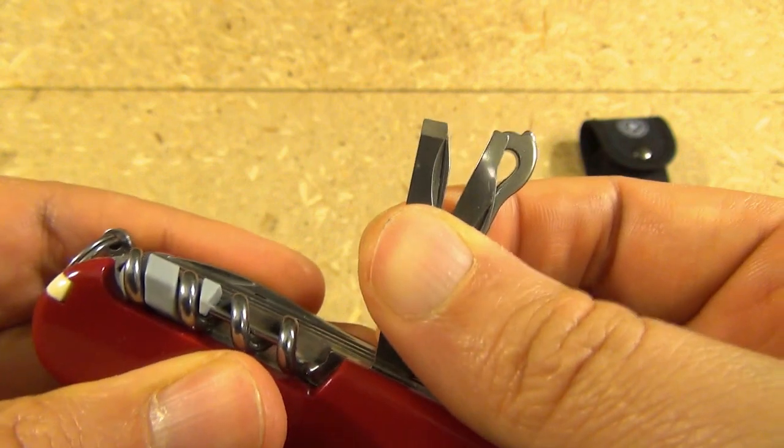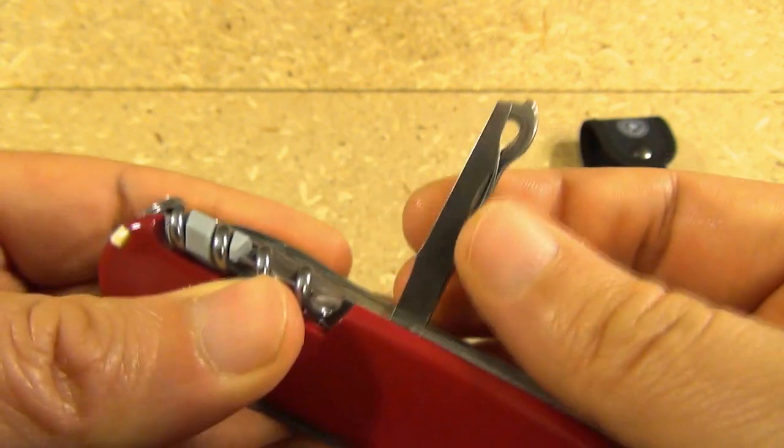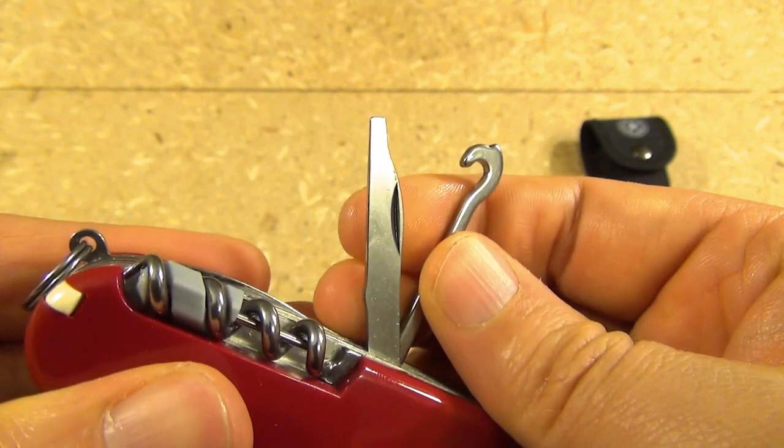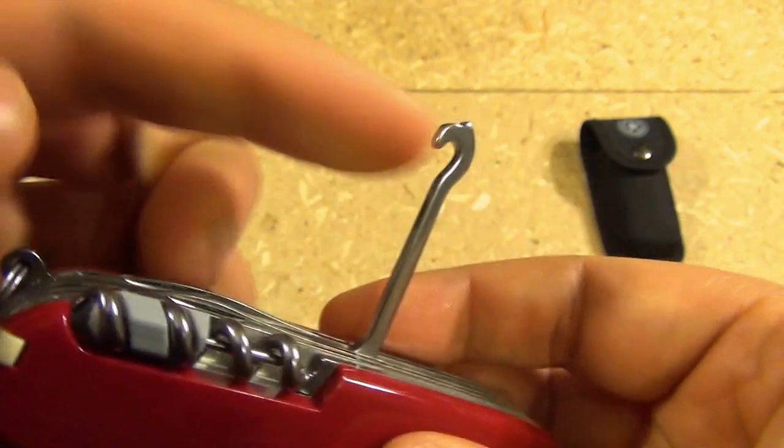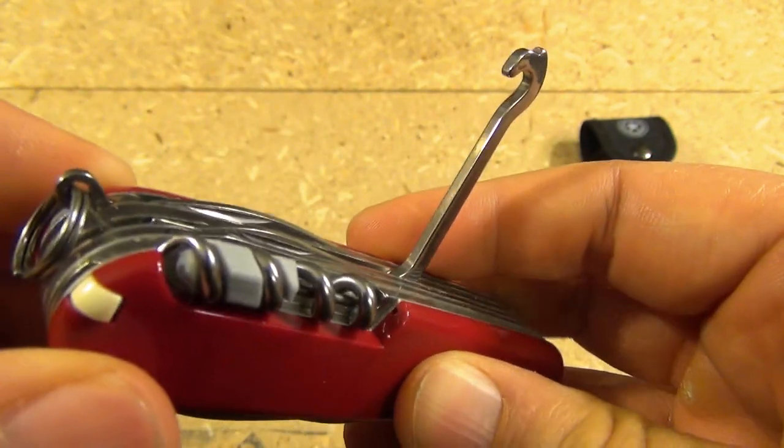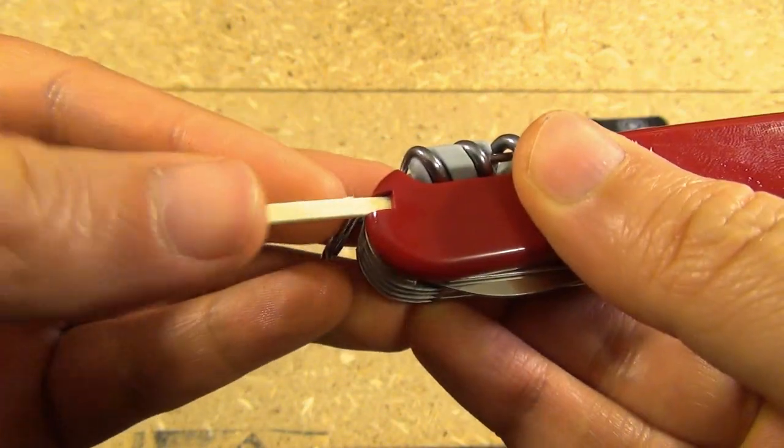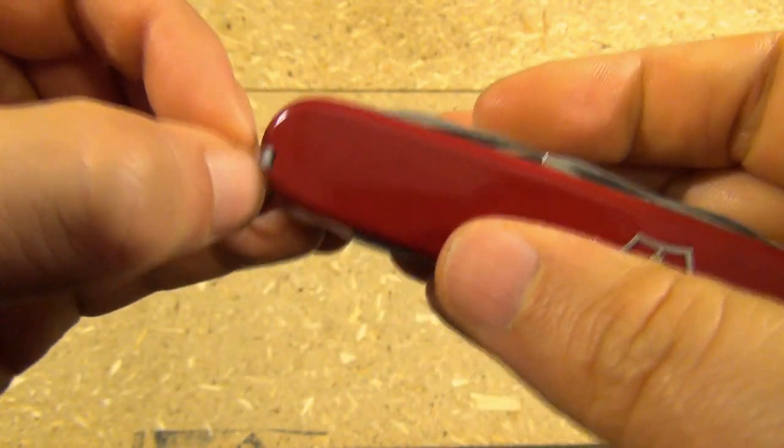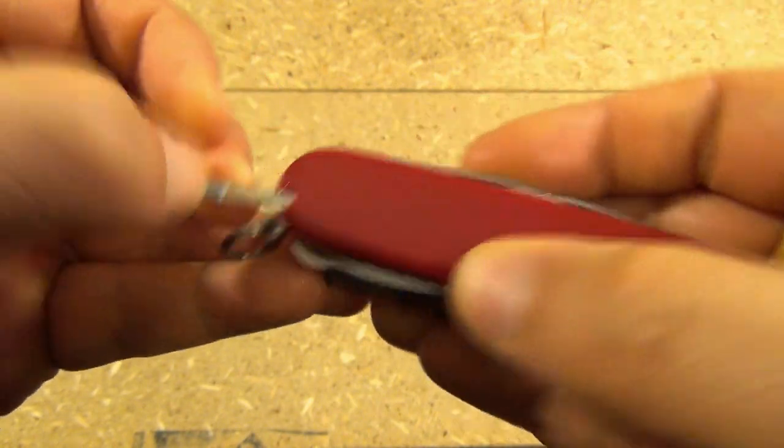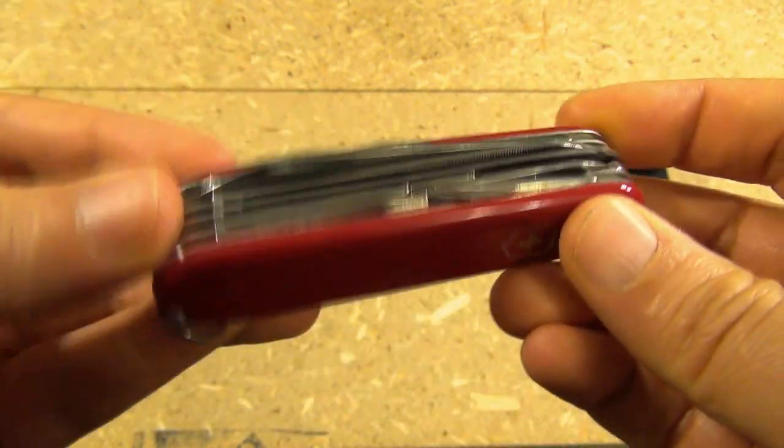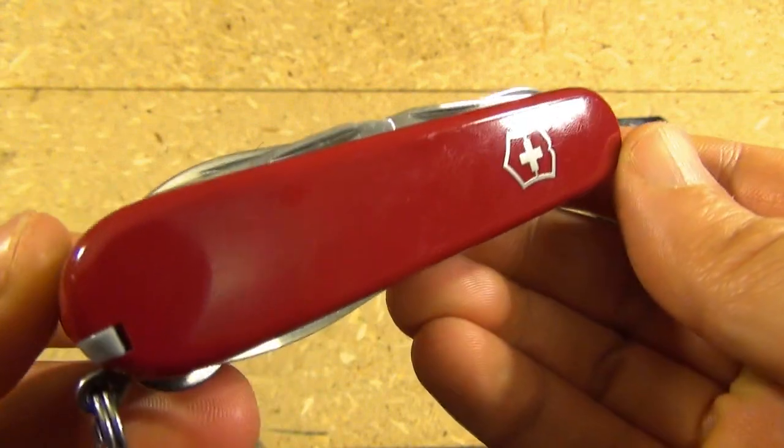Okay, now this is the chisel. This chisel, see here? It's another flathead screwdriver. And the parcel-carrying hook there. It also has a toothpick there, and tweezers there. And those are all the tools on the Ranger.